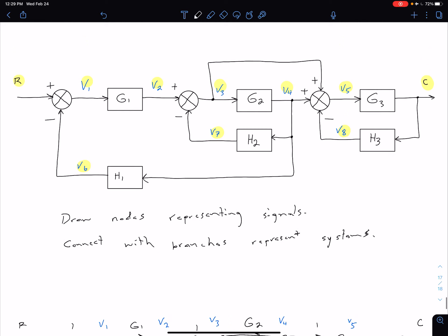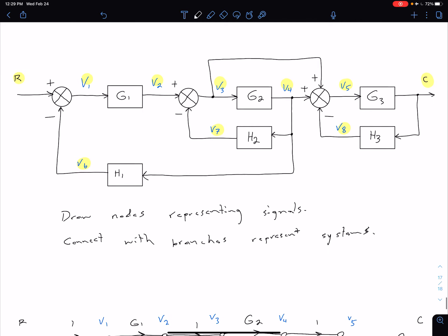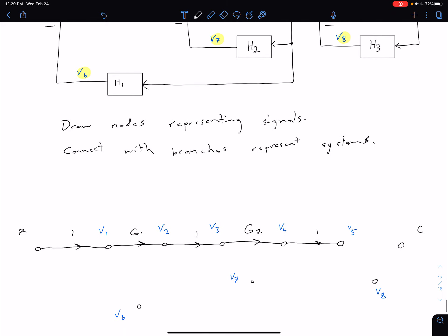And then finally, going from five to C, we have a gain of G3, or we have a system that's being multiplied with a transfer function G3.